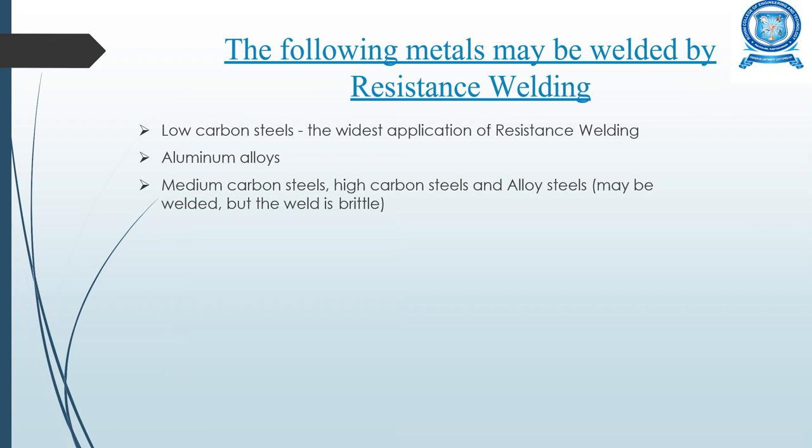The following metals may be welded by resistance welding: low carbon steels have the widest applications, aluminum alloys can also be welded, and medium carbon steels, high carbon steels, and alloy steels may be welded but the weld is brittle.